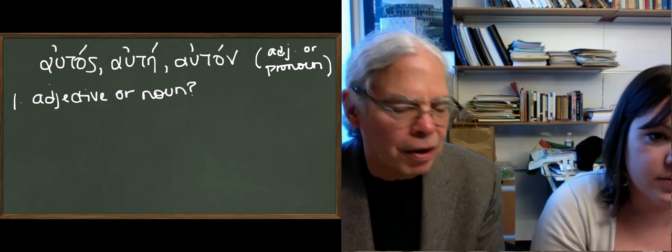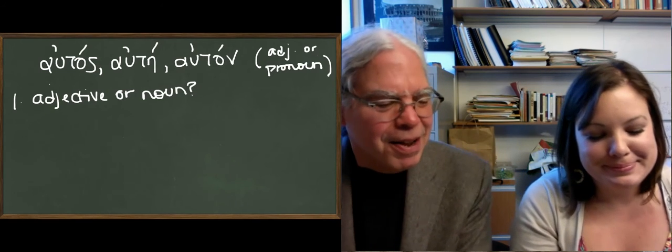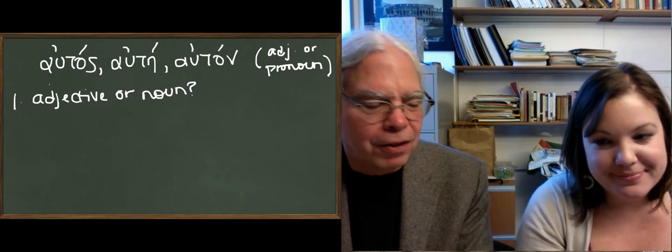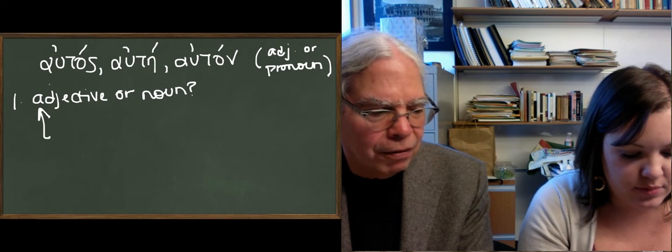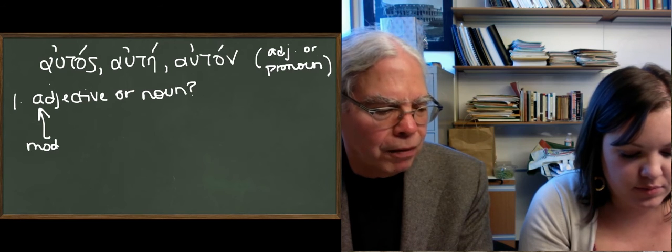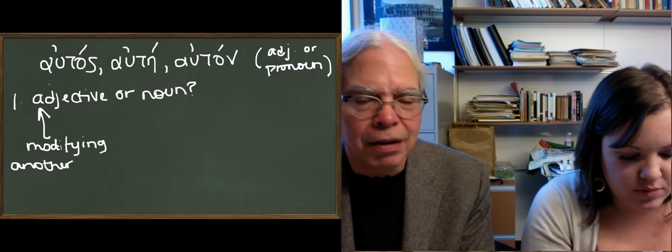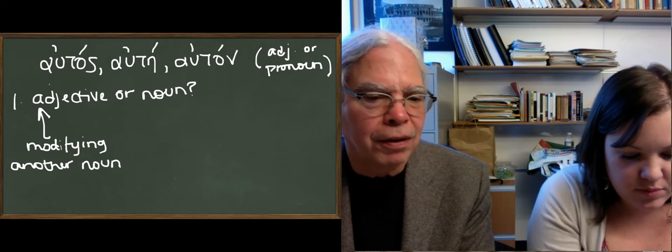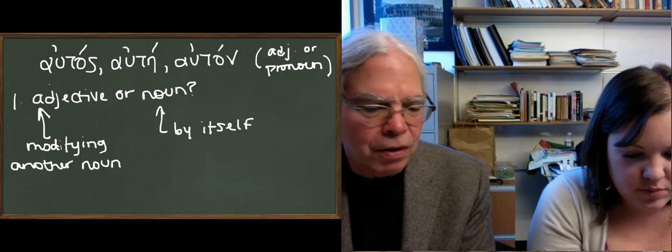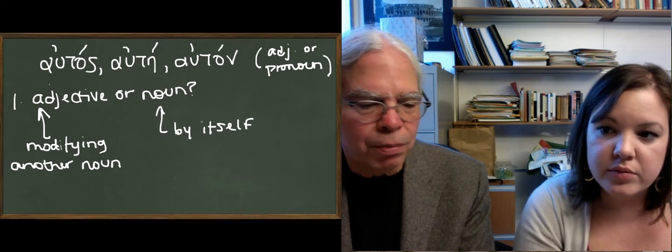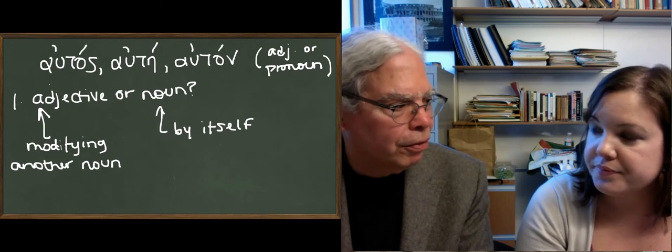The way you tell if it's an adjective or a noun is this: if it's an adjective, it's modifying, it has the gender number in case of another noun. If there's no other noun that it's modifying, it's a noun by itself. In practice this sounds weird, but in reality it's very easy to determine.